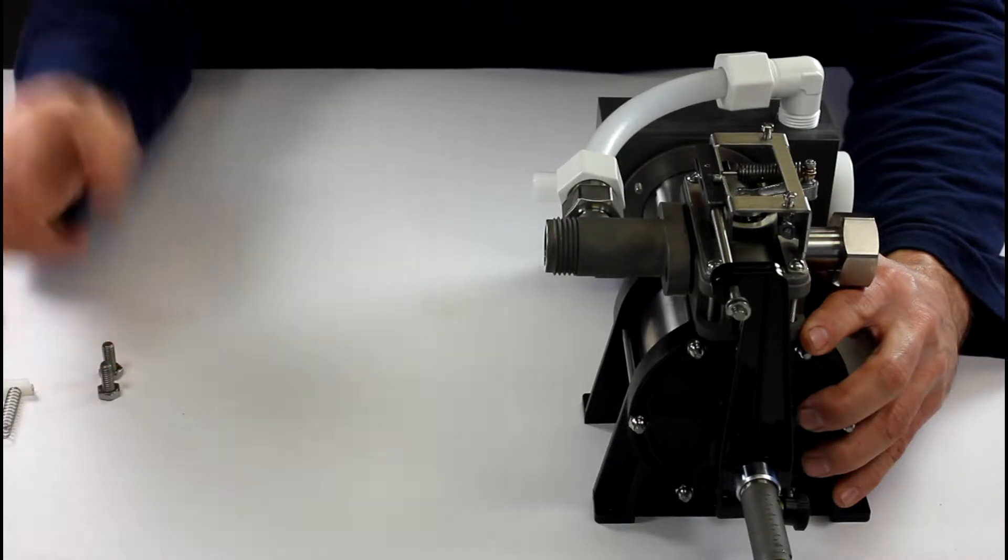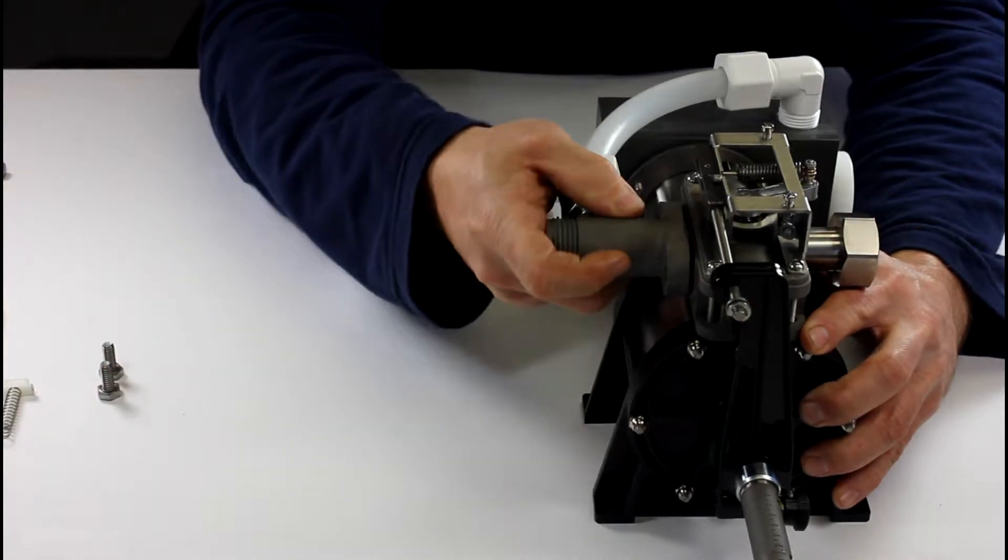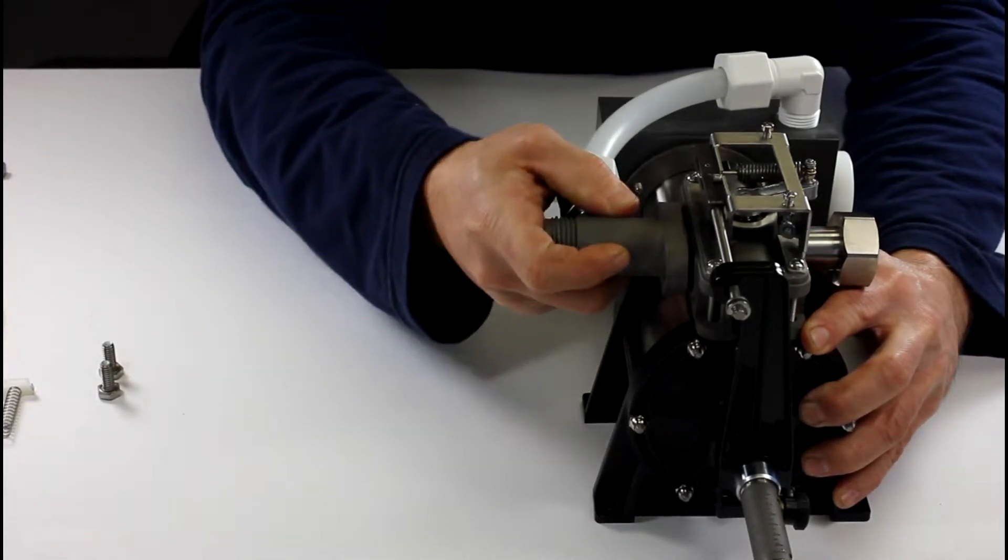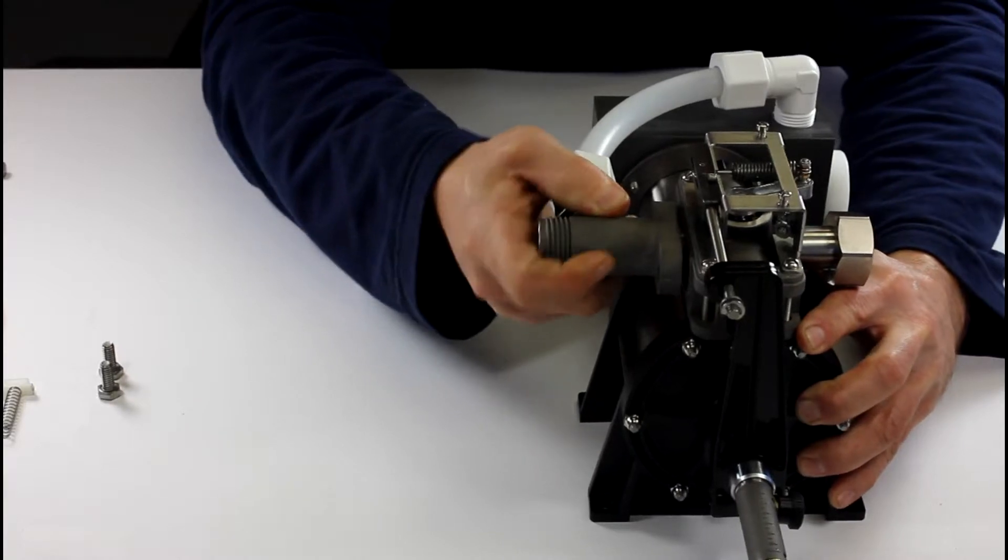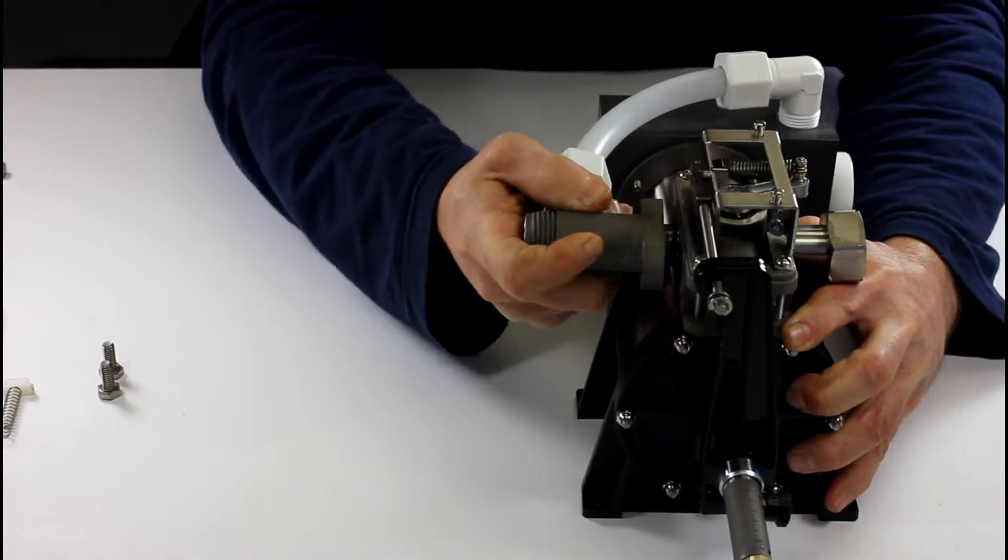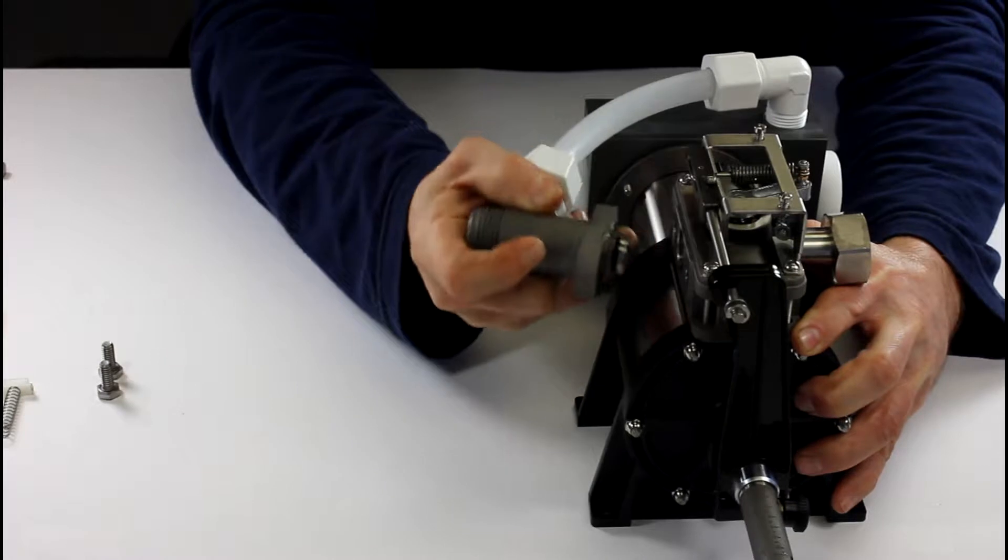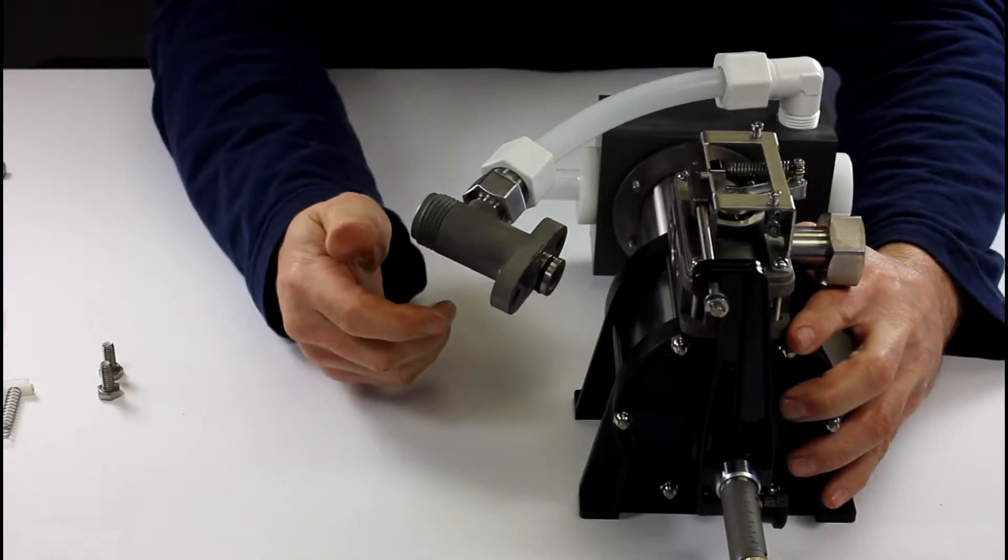Then you're going to remove your outlet fitting. You're going to twist it back and forth, gradually give it a pull out. It's going to be snug, then pop it out.